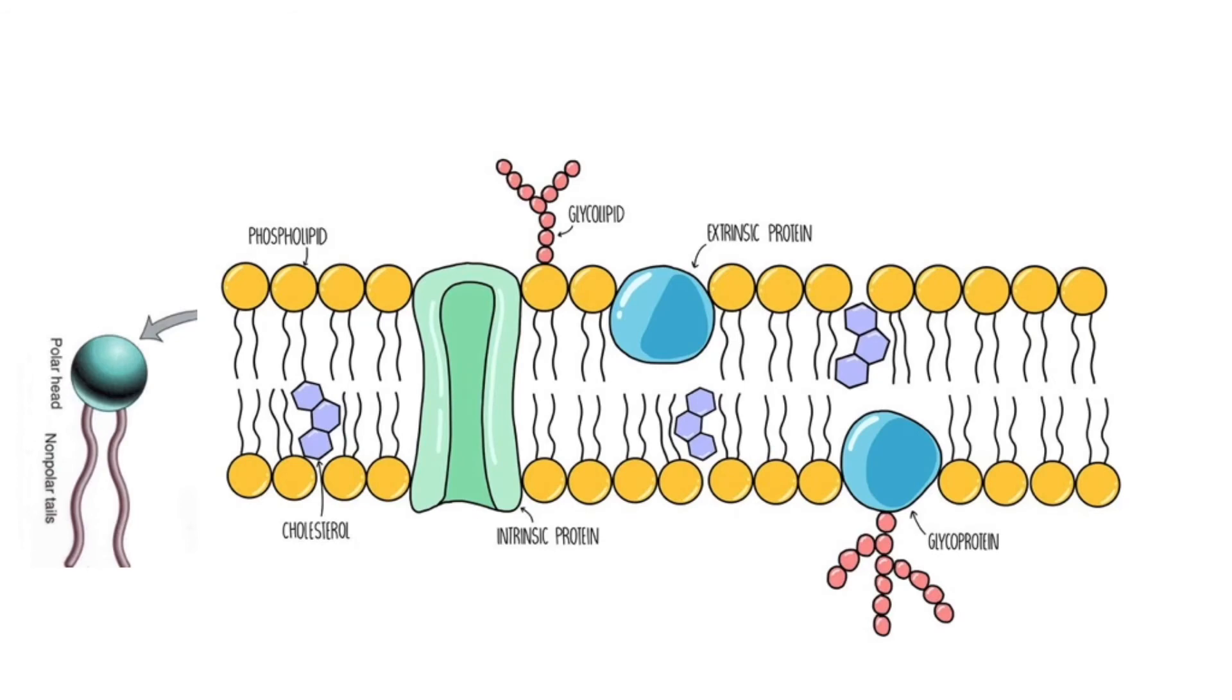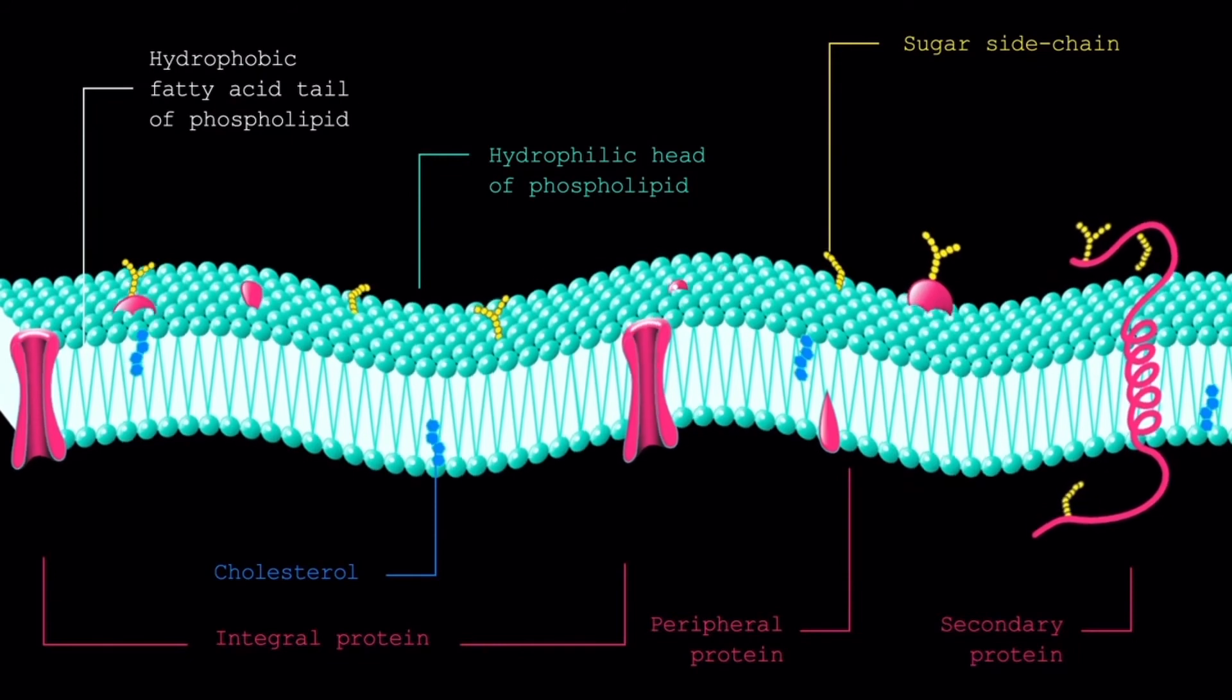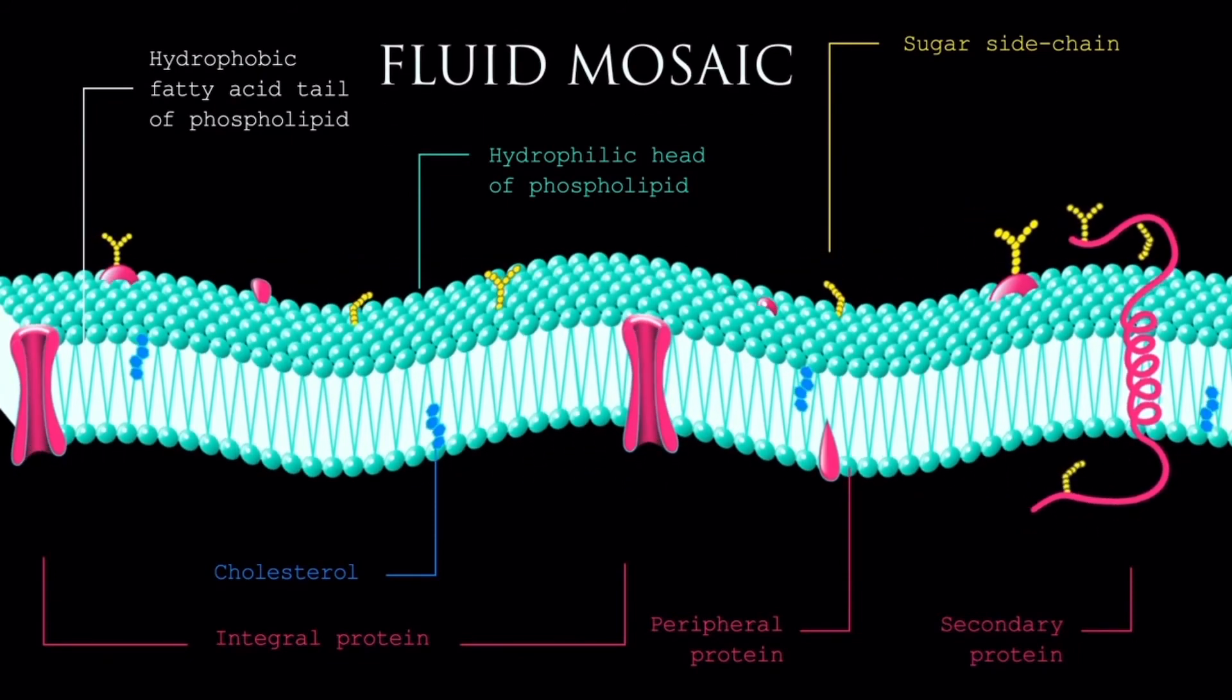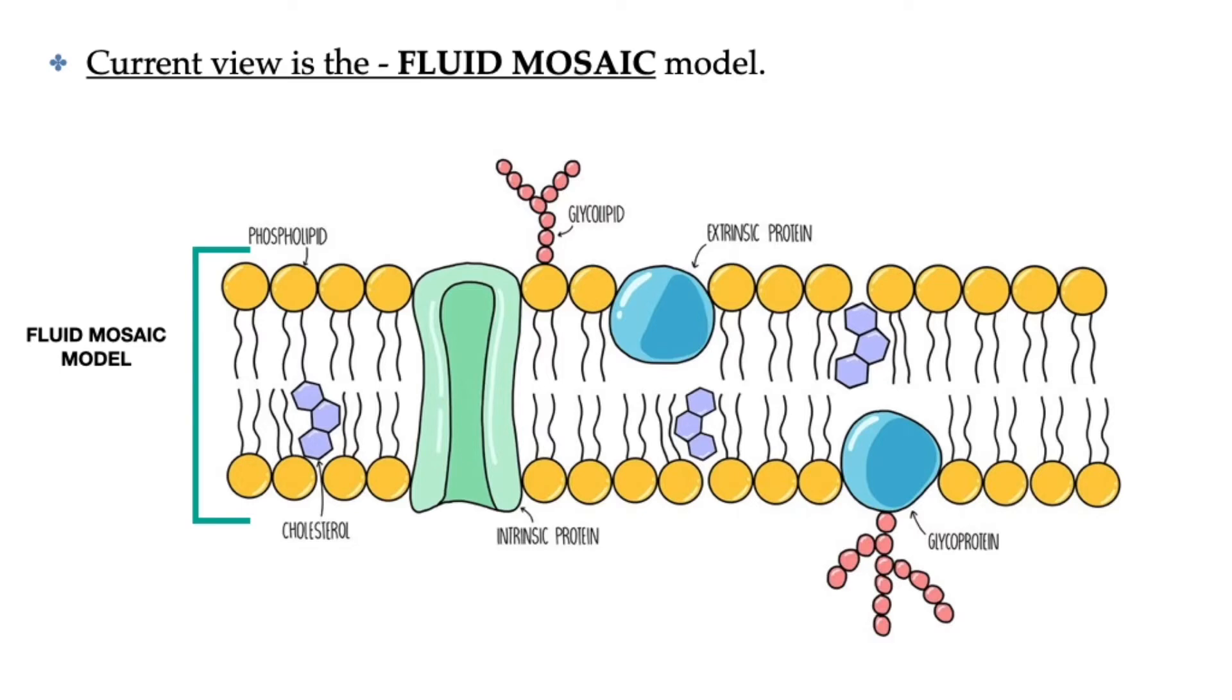Phospholipids are not the only lipid molecule found on the plasma membrane. Embedded throughout the plasma membrane is a lipid molecule called cholesterol. Cholesterol lends support to the membrane and helps regulate its fluidity. Speaking of fluidity, the current view of the plasma membrane is called the fluid mosaic model, which describes the membrane as both a fluid and a mosaic.